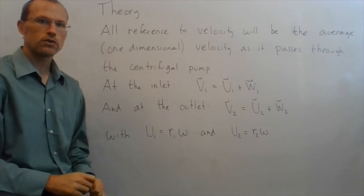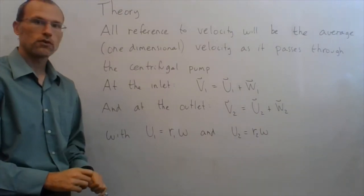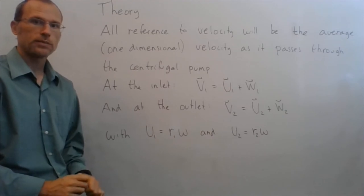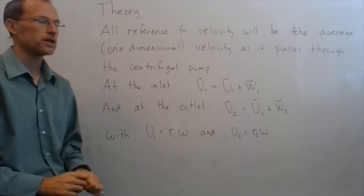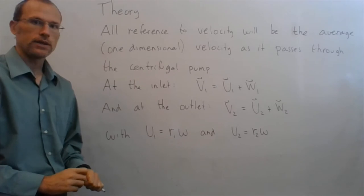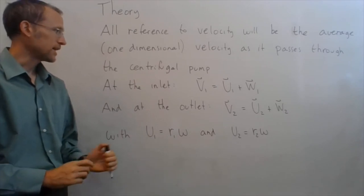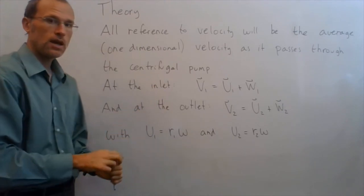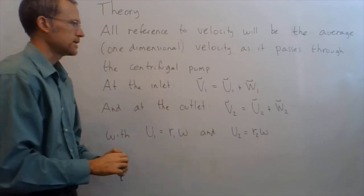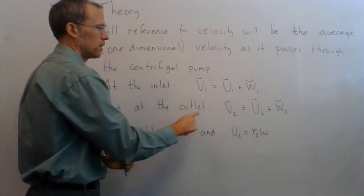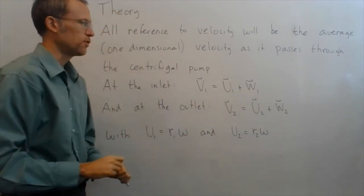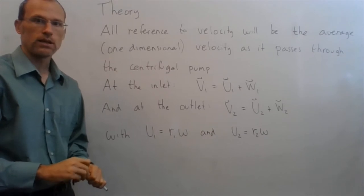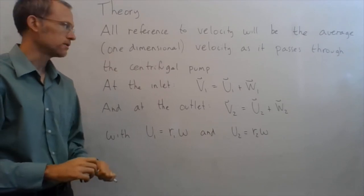So basic theory for centrifugal pumps, when I talk about velocities, this is what we'll be looking at, velocity coming, velocity going out, we'll be dealing with the average one-dimensional velocity as it goes through the centrifugal pump. So at the inlet, we have the absolute fluid velocity, so capital V, absolute fluid velocity, is equal to the velocity of the blades, plus the relative fluid motion with respect to that blade, so same definitions of U, V, and W that we had in the last lesson.